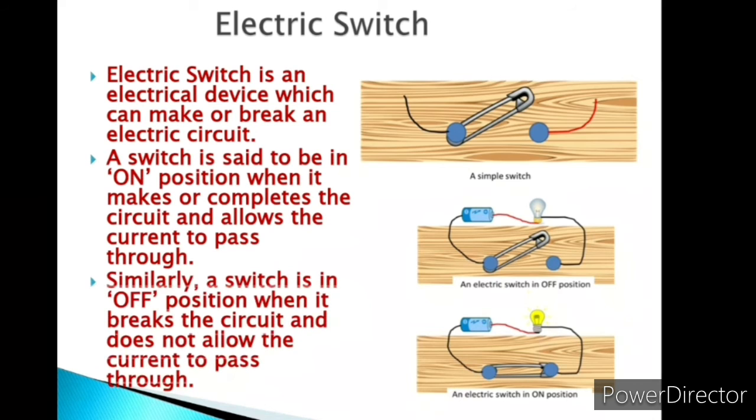Now next one is electric switch. An electric switch is an electrical device which can make or break an electric circuit. A switch is said to be in ON position when it makes or completes the circuit and allows the current to pass through. Similarly, a switch is in OFF position when it breaks the circuit and does not allow the current to pass through.